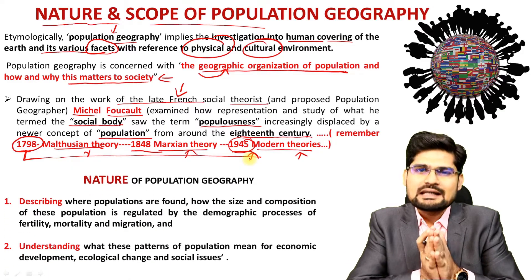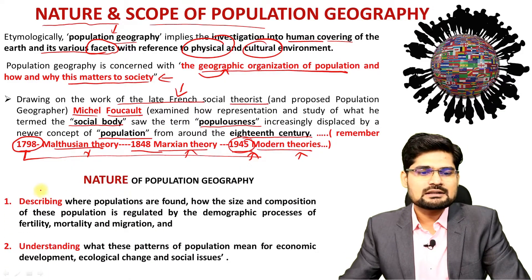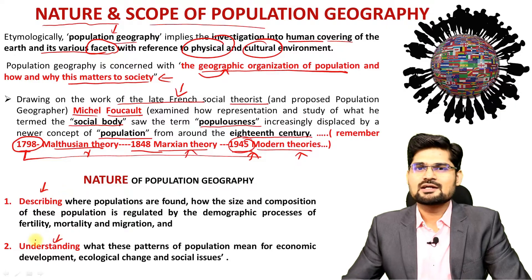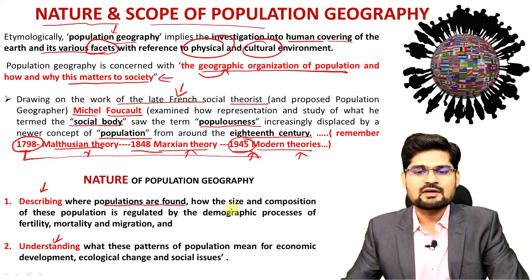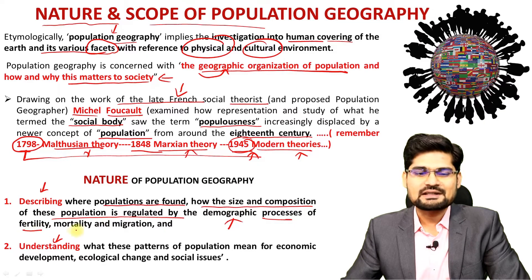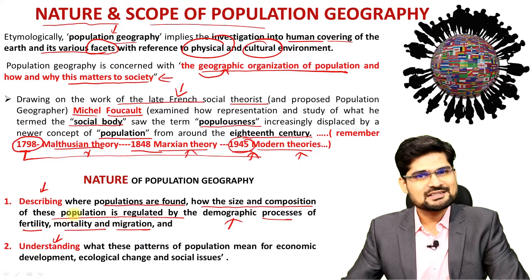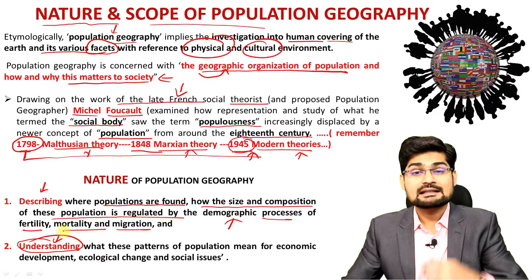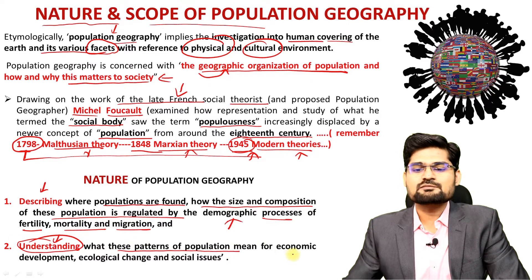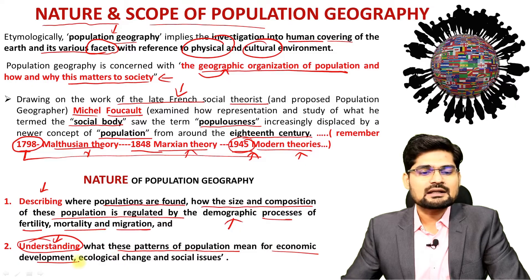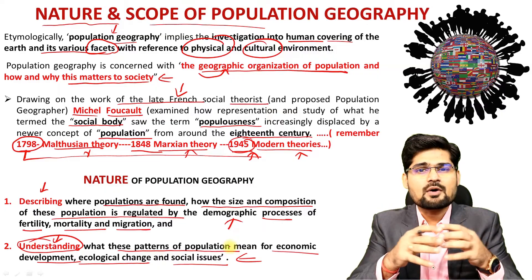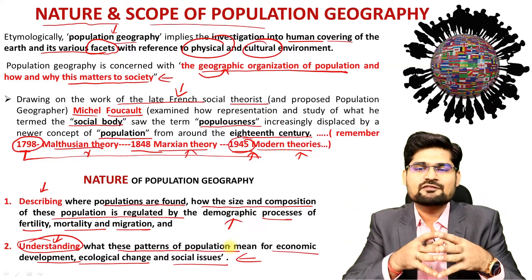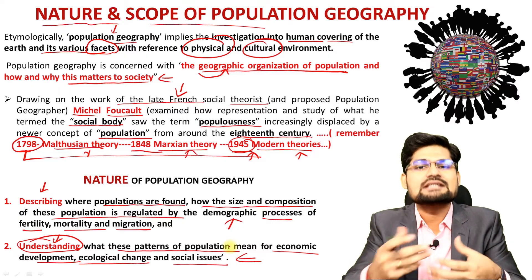Concerning the nature of population geography, it's important to note two important natures. One is the descriptive or chorological nature — where populations are found, how the size and composition of these populations is regulated by demographic processes like fertility, mortality, migration and several others. The second one is understanding the linkages — what these patterns of population mean for economic development, ecological change, social issues and several others. These are the two important building blocks or two important verticals in population geography as its prime nature.